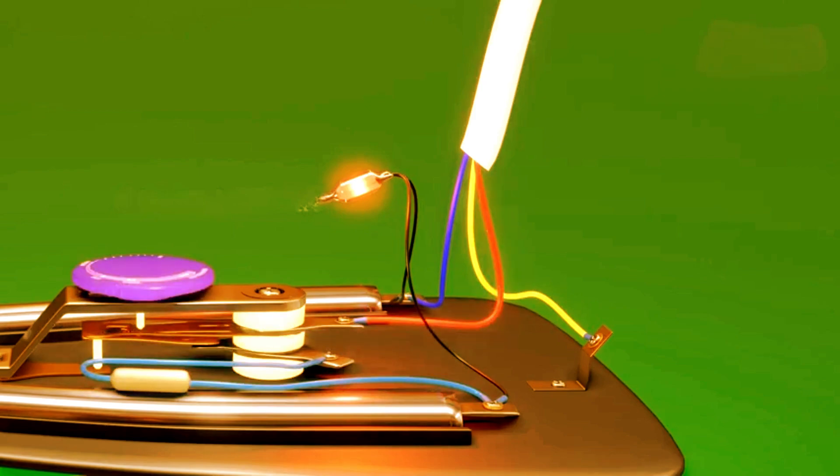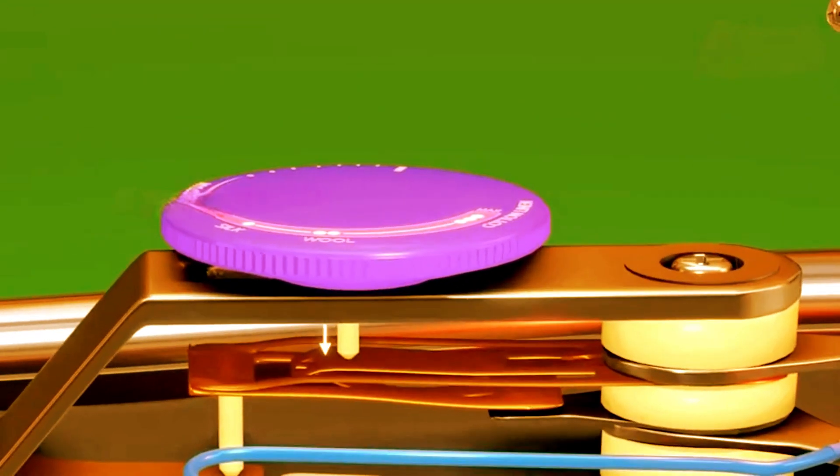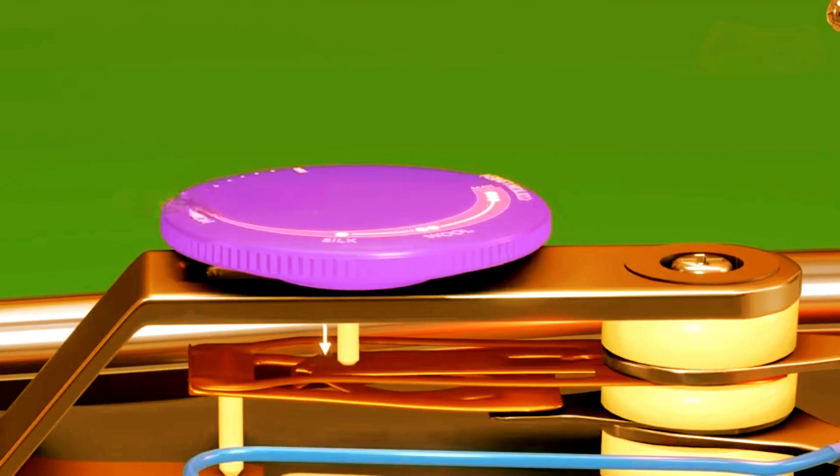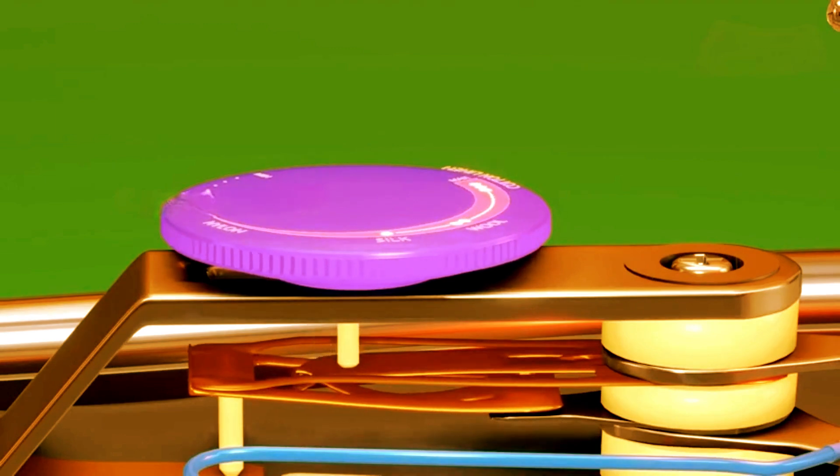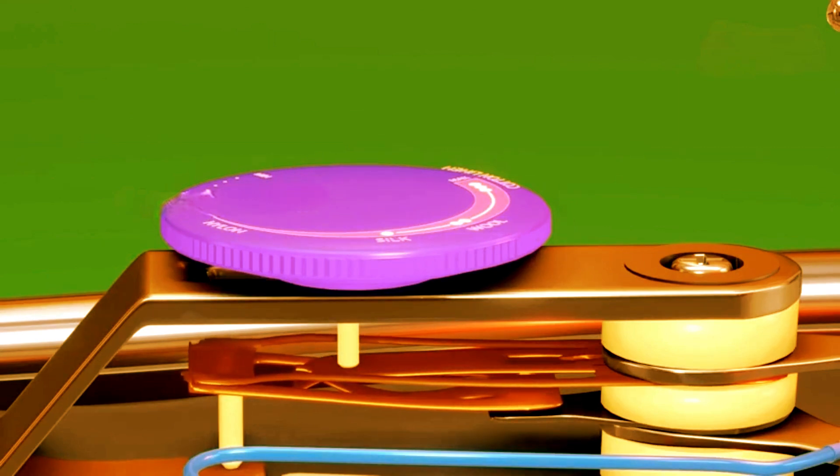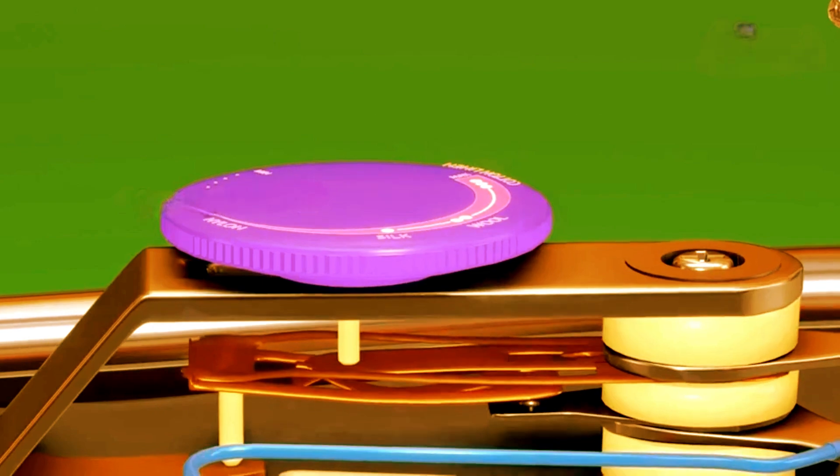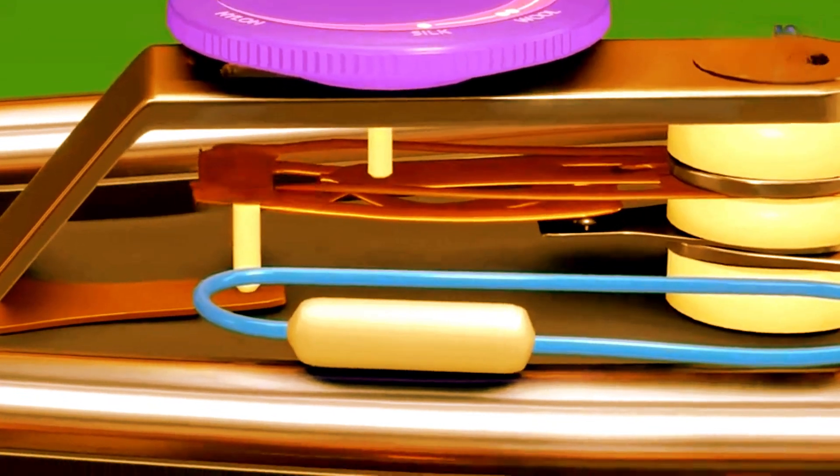When you turn on the iron and set it to a high temperature, electricity flows to the heating element without stopping. When it gets too hot, that is over 200 degrees Celsius, the thermostat turns off the heat. When it cools down below 150 degrees Celsius, the thermostat turns the heat back on.